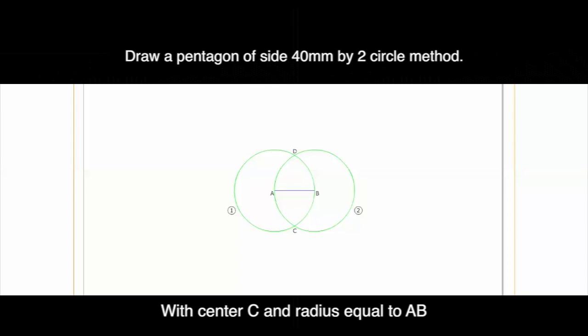With center C and radius equals to AB, draw an arc to cut circle 1 and 2 at E and F respectively.